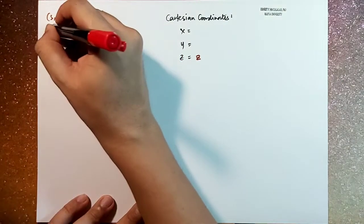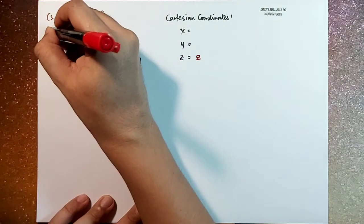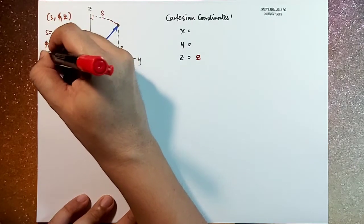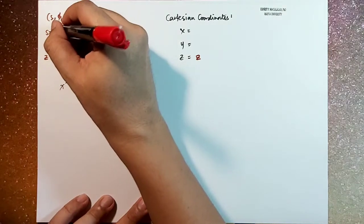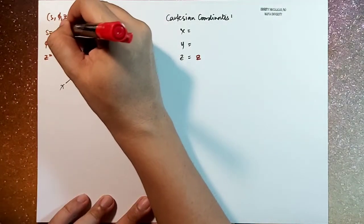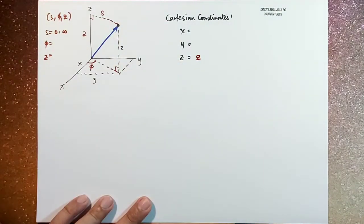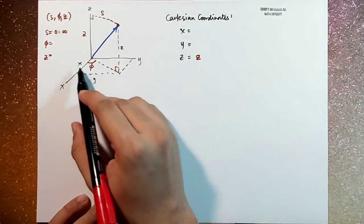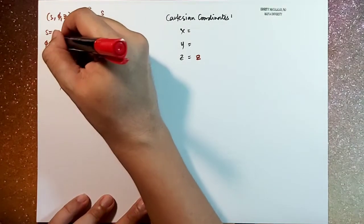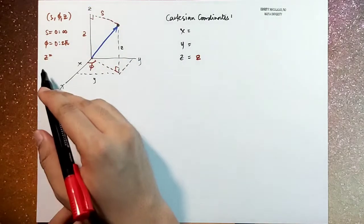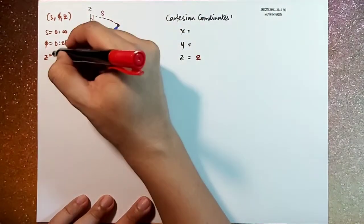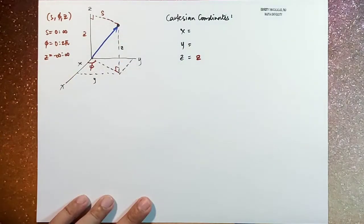The range of s, phi, and z are as follows. Phi can range from 0 to infinity. Phi, on the other hand, which is an angular component, is from 0 to 2 pi,